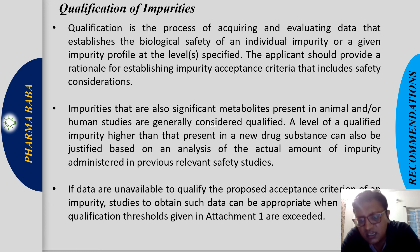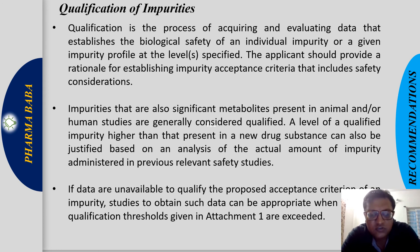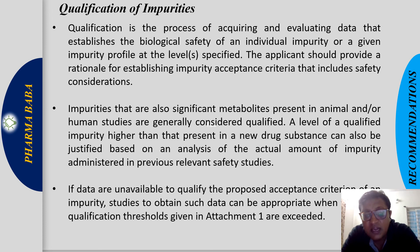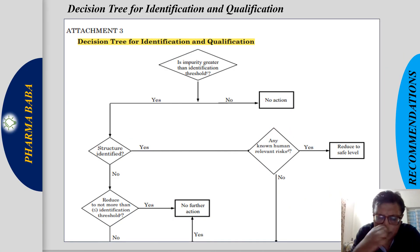A level of qualified impurity higher than that present in a new drug substance can also be justified based on analysis of the actual amount of impurity administered in previous relevant safety studies. If data are unavailable to qualify the proposed acceptance criteria, studies to obtain such data can be appropriate. Now we will go through the decision tree provided in ICH Q3A on how to decide the approach for your impurity.